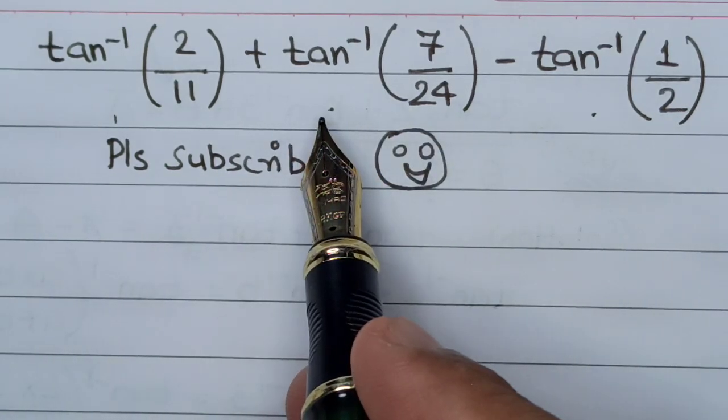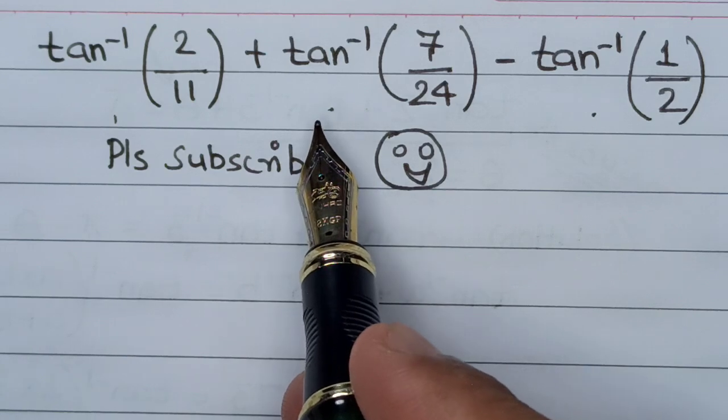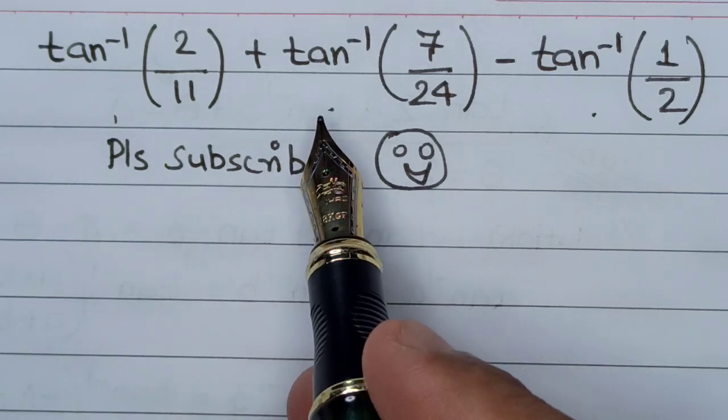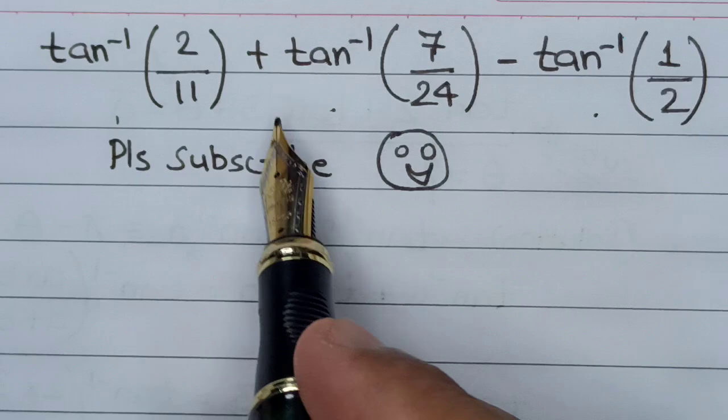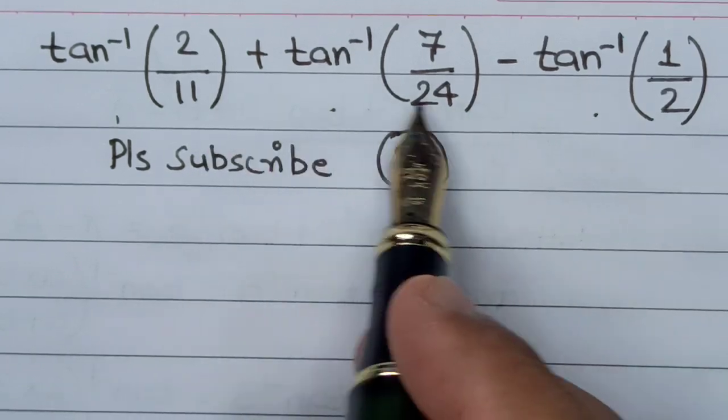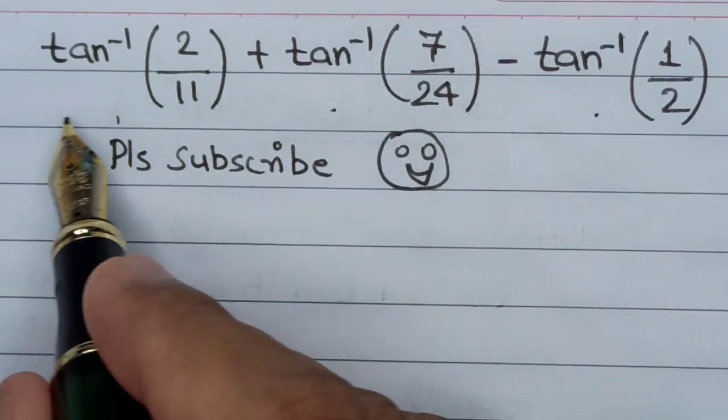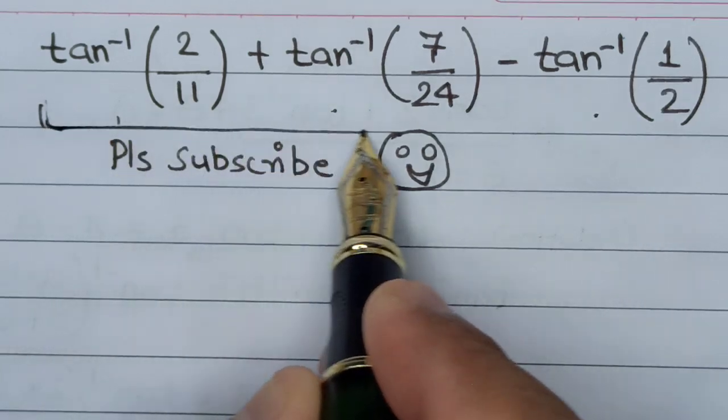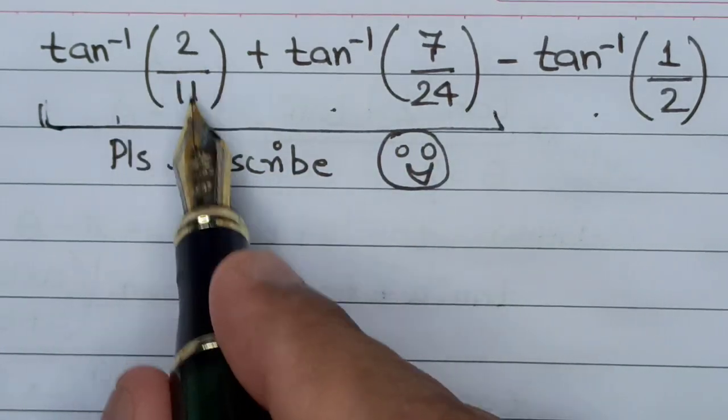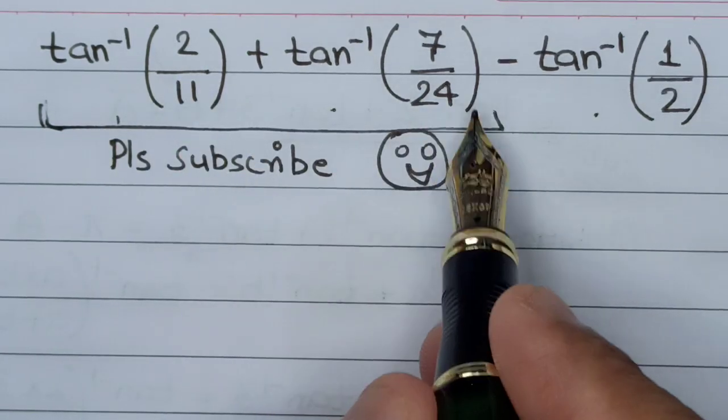All the standard formulas for trigonometry—tan⁻¹(a) + tan⁻¹(b) or tan⁻¹(b) + tan⁻¹(c)—are designed for two entities at a time. So in this case, we will select the first two: tan⁻¹(2/11) + tan⁻¹(7/24), and start applying the formula.